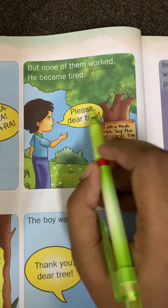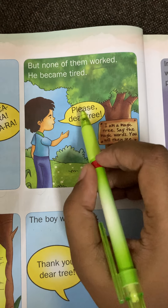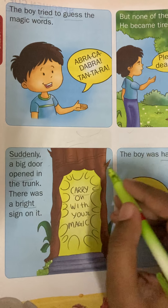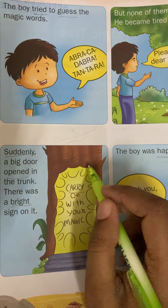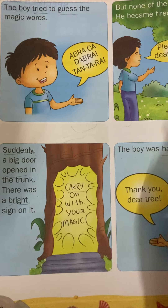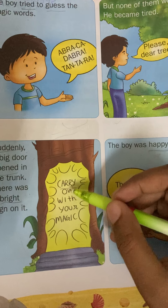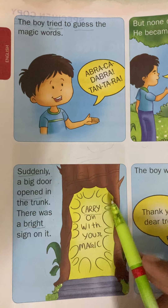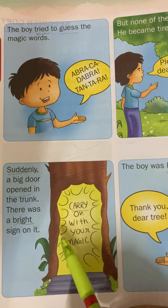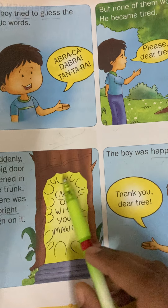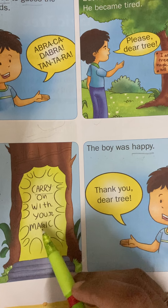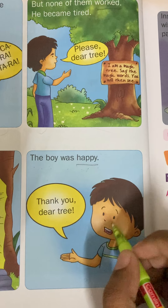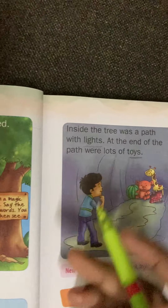Then the boy said, 'Please, dear tree.' Suddenly a big door opened in the trunk. There was a bright sign on it saying: 'Carry on with your magic.' The tree was saying: proceed with your magic. The boy was happy and said, 'Thank you, dear tree.' Then the door opened further.